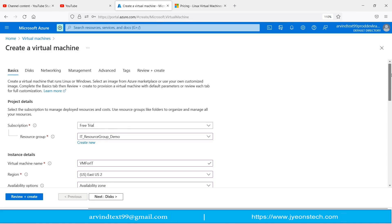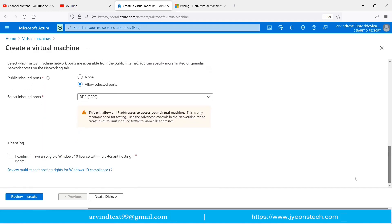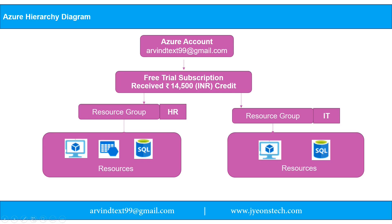To create a virtual machine you need to fill in all the details and click Review and Create. The virtual machine will be created under the resource group you selected — if you selected IT it goes under IT Resource Group, if you selected HR it goes under HR. In this video we have learned how to create resource groups and under them how to create virtual machines — two resource groups, one for HR and one for IT, each with a virtual machine.